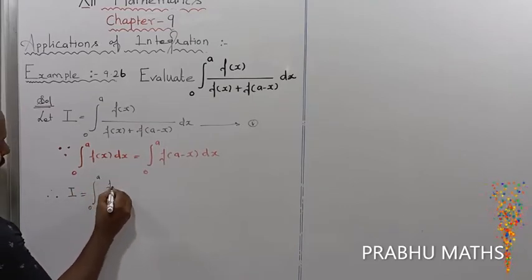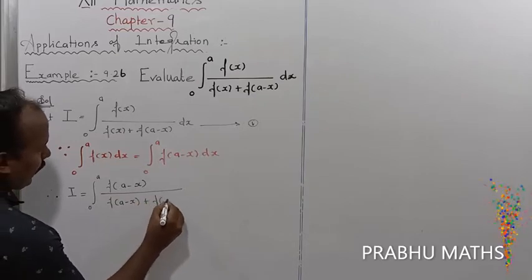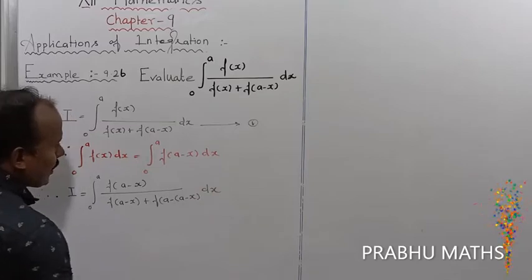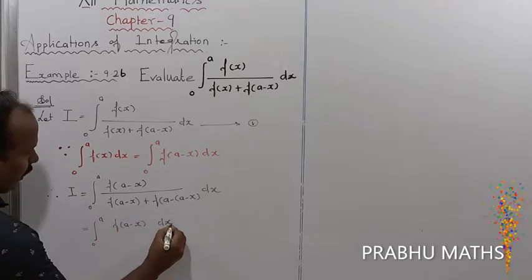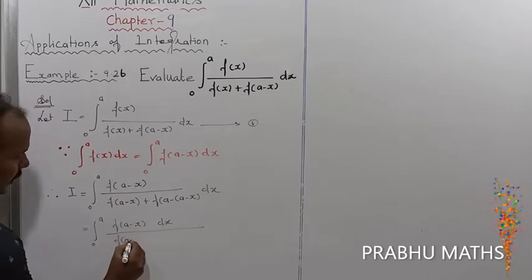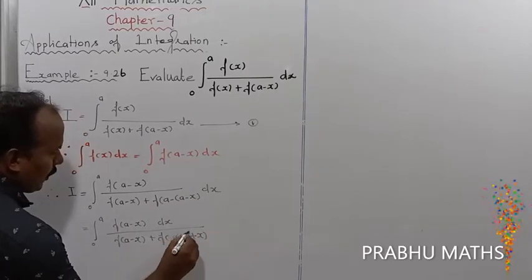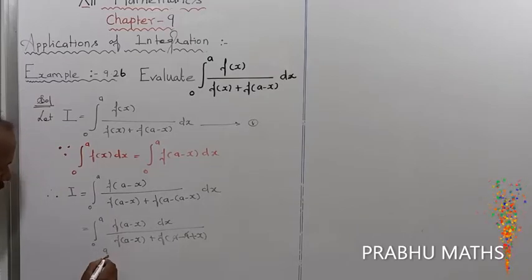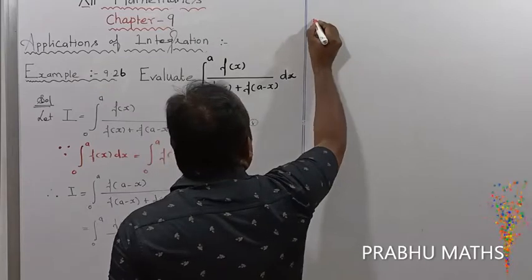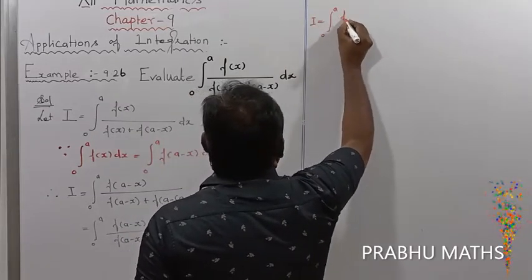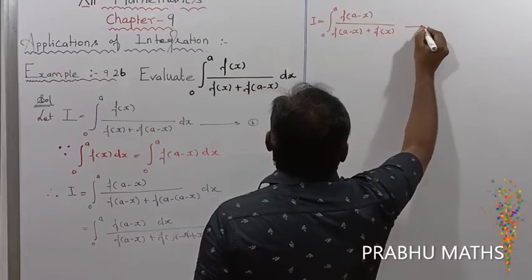By using the formula, x is replaced by a minus x: so [a minus x] divided by [a minus x plus f(a minus x)] dx. That is equal to integral of 0 to a of f(a minus x) divided by [f(a minus x) plus f(x)] dx. This is equation number 2.